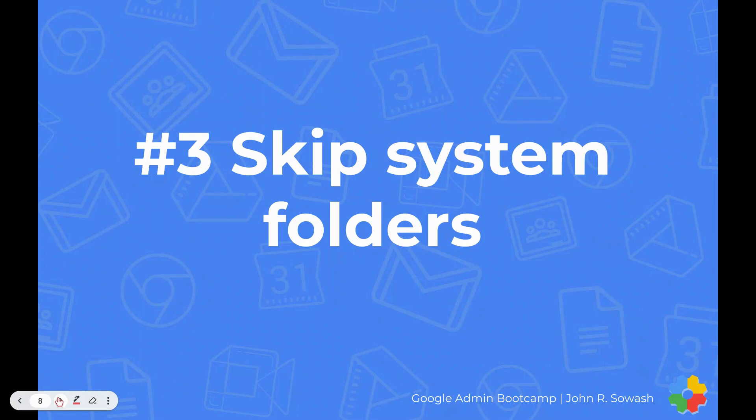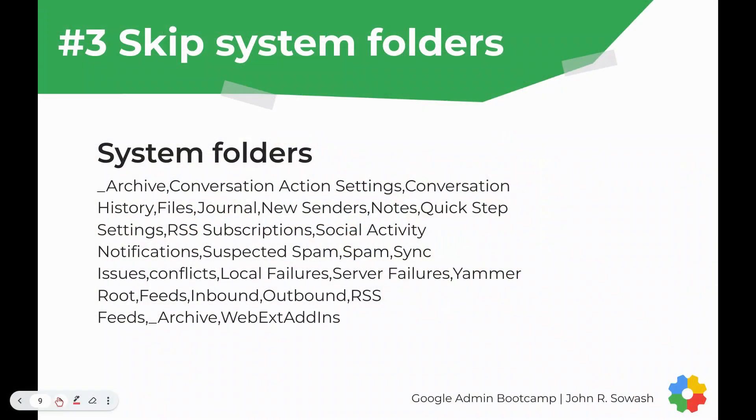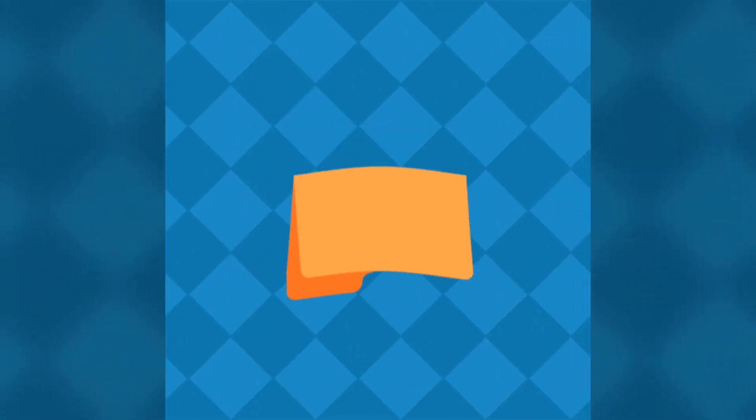Running these test migrations also helped us identify some folders we could skip during the migration. When you set up your migration inside the Google Admin Console, one of the options you'll see is folders to exempt or skip — and there are tons of them. Individual users don't necessarily see a lot of these folders; they're more system folders, but the migration tool will grab them and pull them over if you don't exempt them. I'll include these folders in the description to this video so you can copy and paste, but that's one of the benefits of running test migrations initially — you can figure out what folders you want to skip.